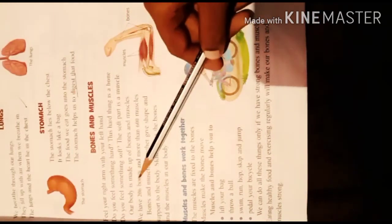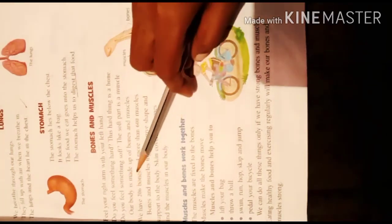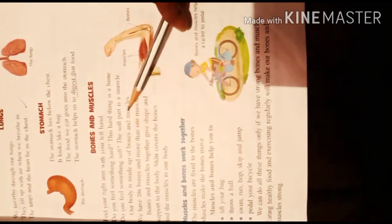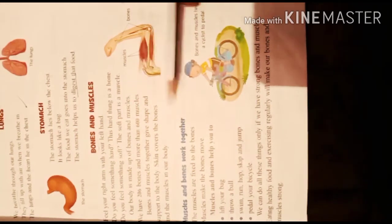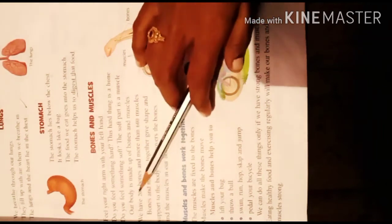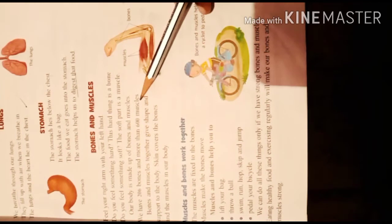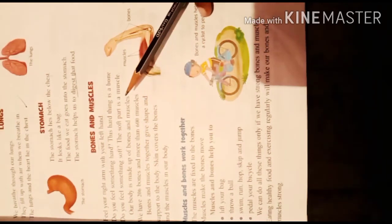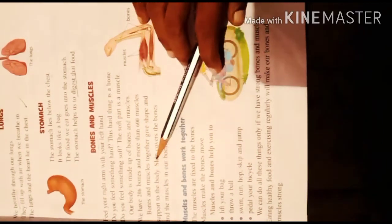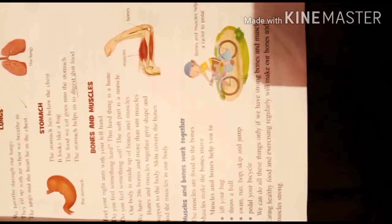Our body is made up of bones and muscles. In our body there are 206 bones and more than 600 muscles. These bones and muscles together give shape and support to our body, keeping us upright as a person.